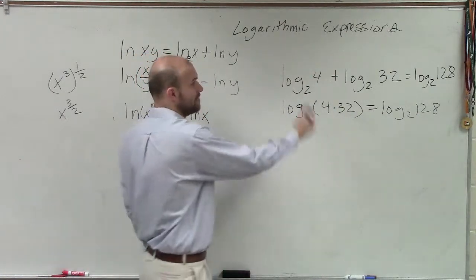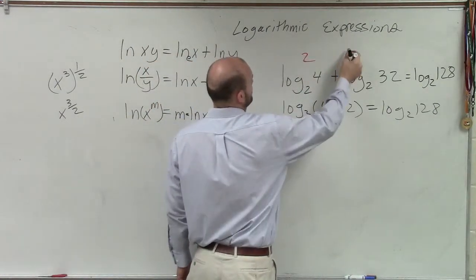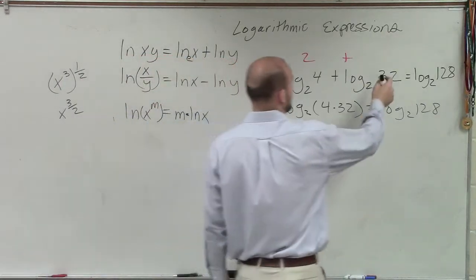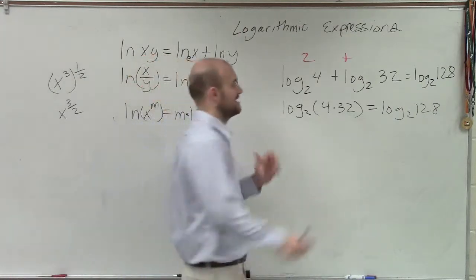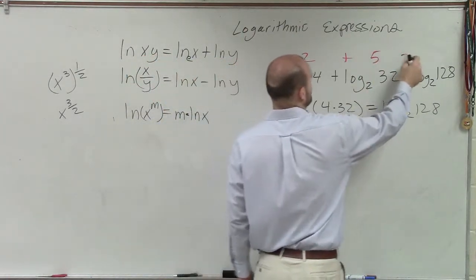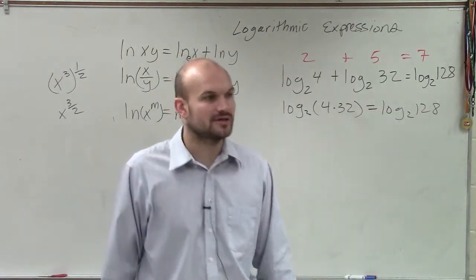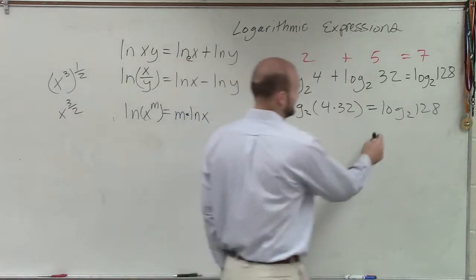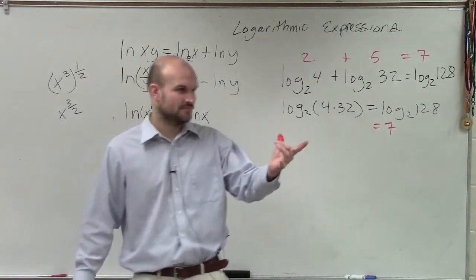2. 2 raised to what power gives you 4? The answer is 2. Plus log base 2 of 32, which is 5. 2 plus 5 is 7. 2 raised to how many powers gives you 128? 7, so do you see how that works?